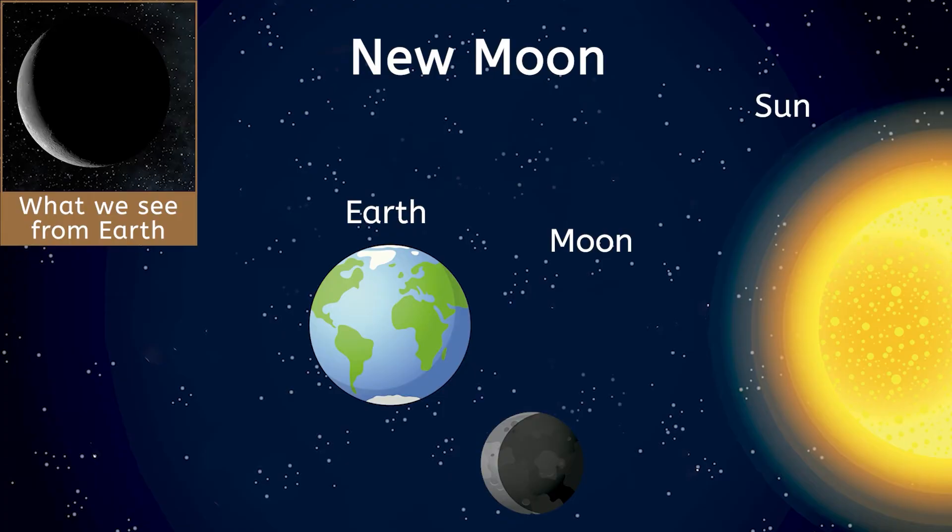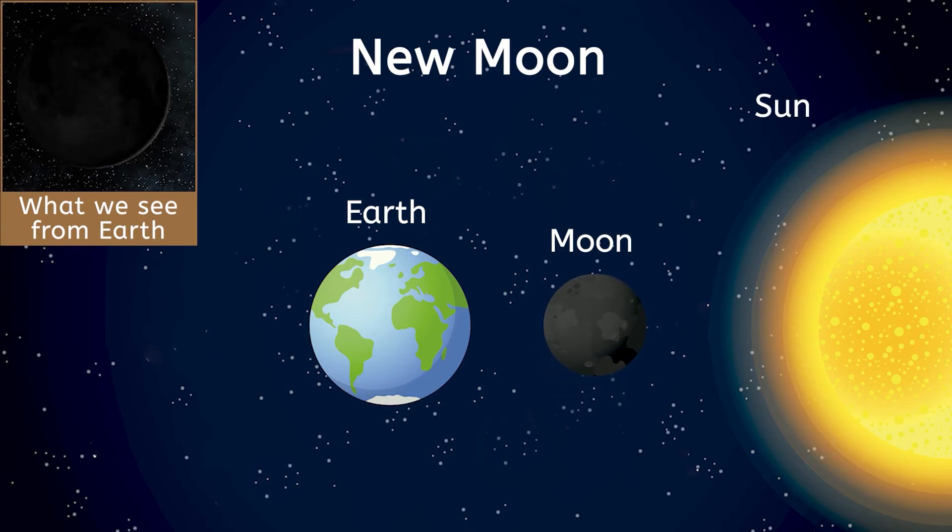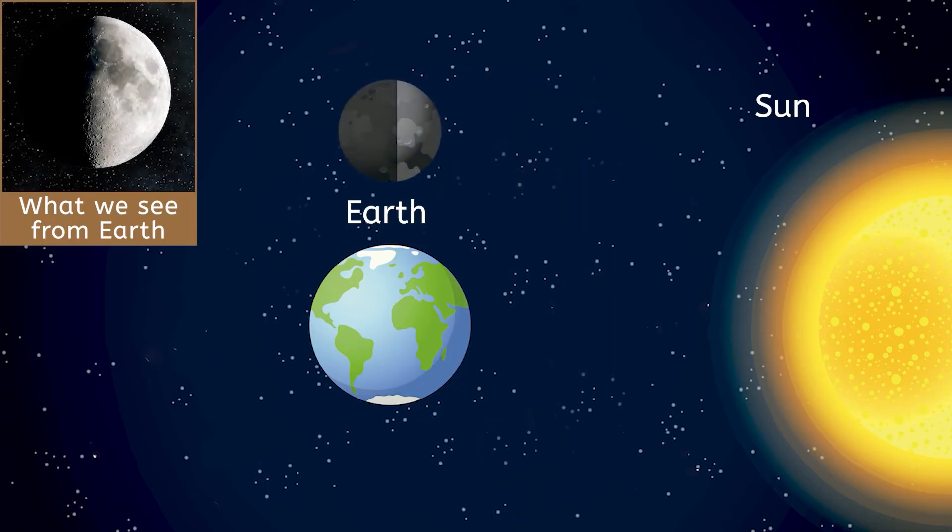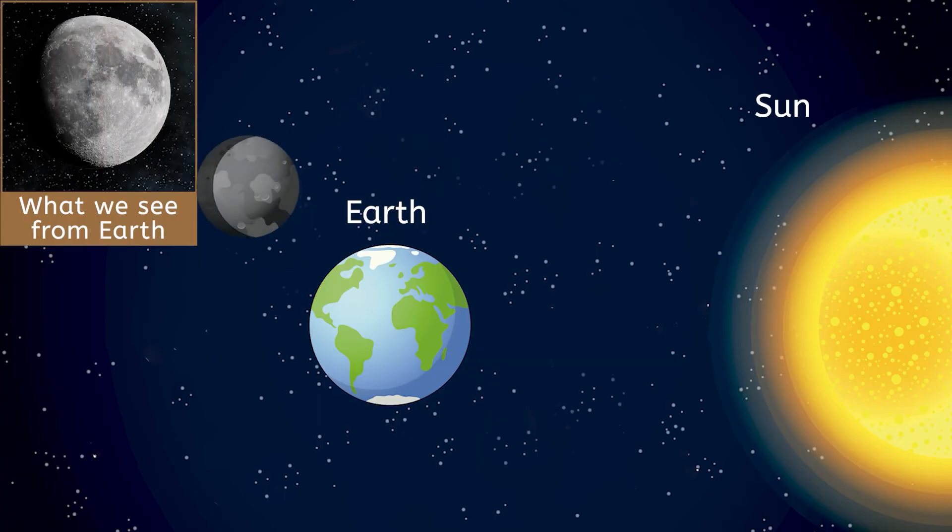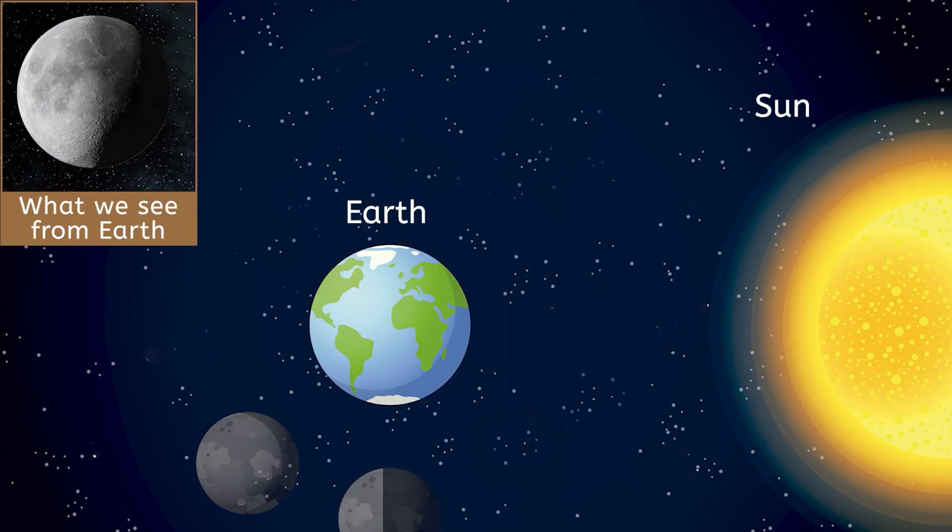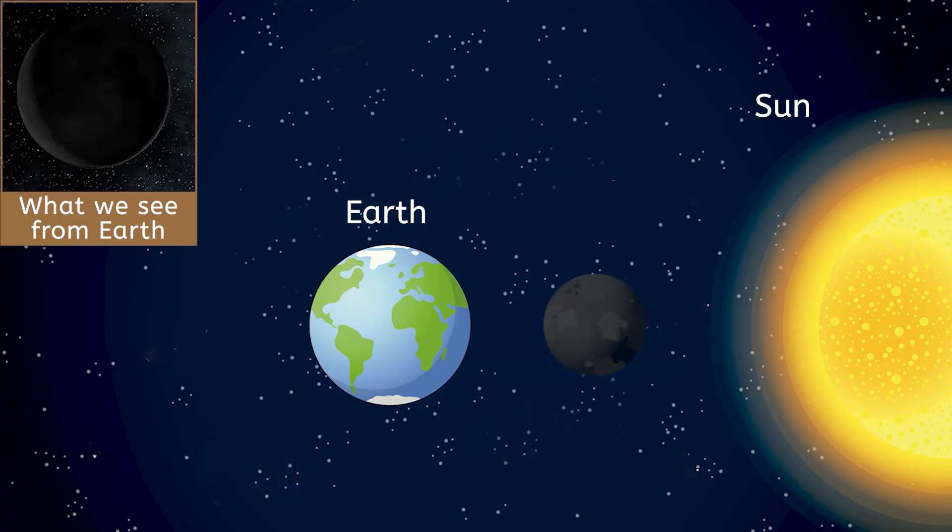After the waning crescent phase, the moon now returns to the new moon phase, moving between Earth and the Sun, making it invisible to us from Earth. So begin the phases all over again! This process creates a cycle, or a pattern, that the moon follows around every 29.5 days. And each phase lasts for around 3 to 4 days. By following these patterns and this cycle, you can predict how the moon will look each night.